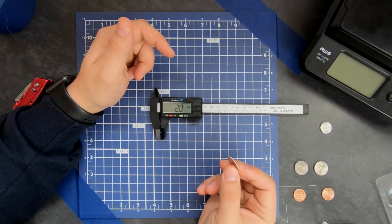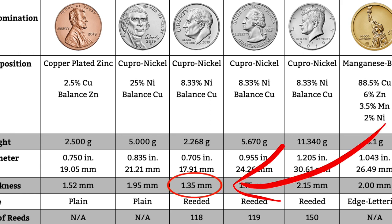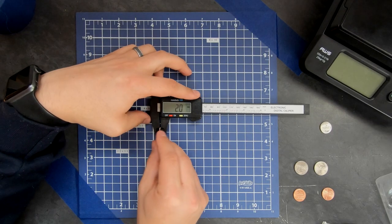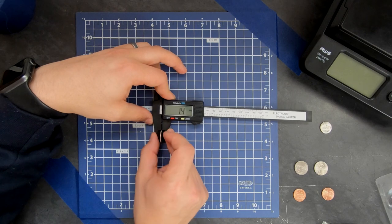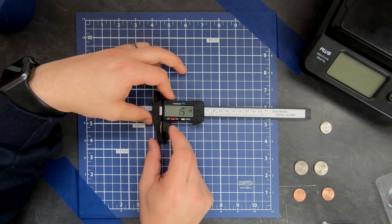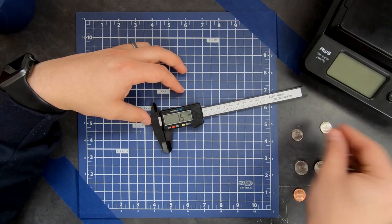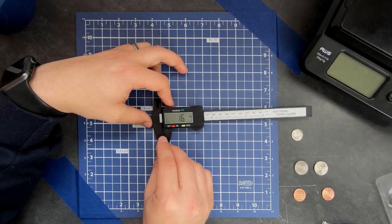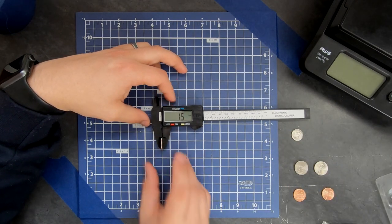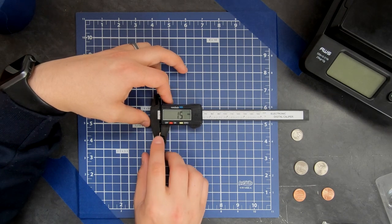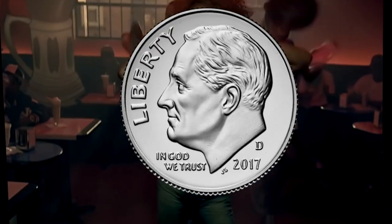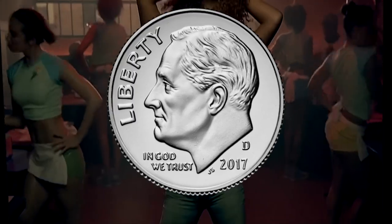All right. And a dime, lastly, is 1.35 millimeters. So right at the tip, and that's coming in at 1.4. Further in the back, yeah, 1.4. This one's pretty on point too. The other 2019 dime, 1.5. Ooh, that's one of them thick dimes. I don't know.